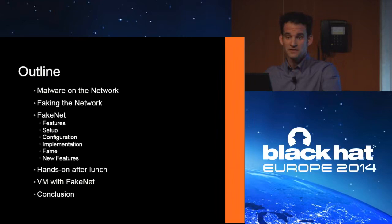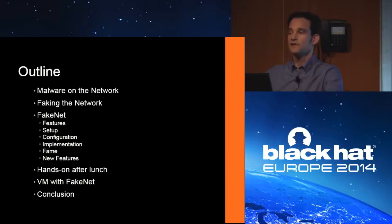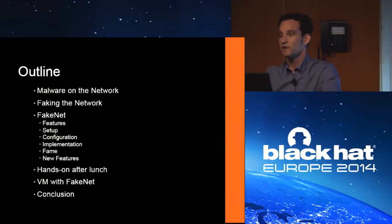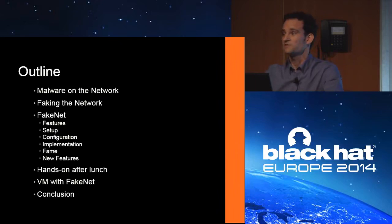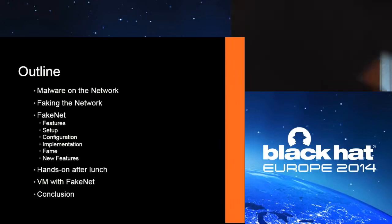We have six USB keys going around the room being copied. We're not going to use the stuff on those keys until we come back from lunch at two o'clock. The key has a VM on it — it's VMware. You're going to need to install VMware if you don't have it. You can download a free 30-day trial of VMware Workstation from their website. The VM is not available online; we will have FakeNet available for download, but you should remove the VM after the end of the workshop.